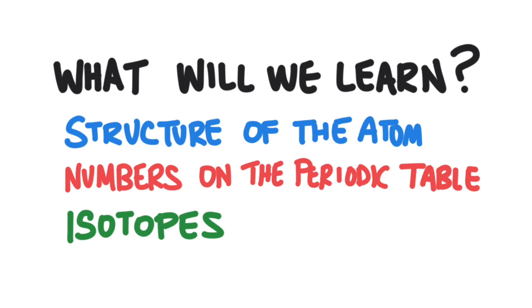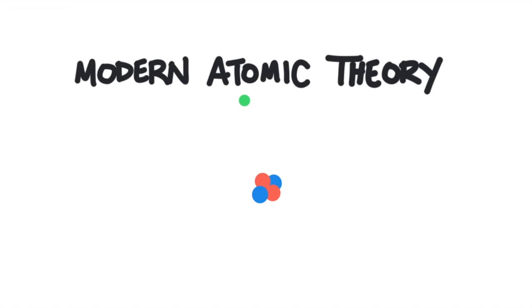What are we going to learn in this lesson? First, we'll learn about the structure of the atom, and then we're going to learn about some numbers on the periodic table that help to describe atoms of a particular element. And then finally, we'll learn about isotopes. There have been many discoveries that have contributed to our understanding of the atom, but we'll skip to the end and learn about what we know about the structure of the atom at this point. It's called the modern atomic theory.